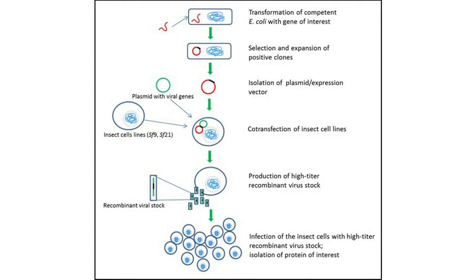That was my job in the lab in addition to my research project. It's called the SF9 overexpression system. You create a virus with the protein of interest, you infect your insect cells, and then you harvest the protein from those cells by busting them open and creating a cytosol.